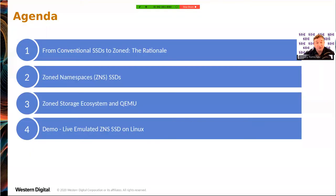Our agenda for today: first we're going to talk a little bit about ZNS in general, the rationale for introducing it, and some select features. I don't want to overlap with other talks scheduled for this conference about ZNS. Then we'll talk specifically about emulation of zone namespaces in QEMU, and we'll have a little demo to illustrate how it works.